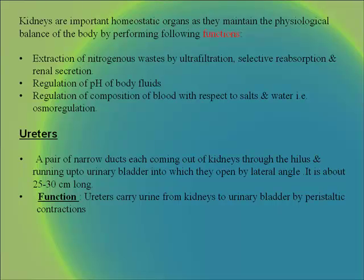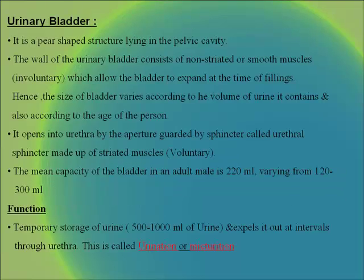Ureters are a pair of narrow ducts coming out of the kidneys through the hilus and running up to the urinary bladder, about 25 to 30 cm long. They carry urine from the kidneys to the urinary bladder by peristaltic contractions. The urinary bladder is a pear-shaped structure lying in the pelvic cavity, with walls consisting of non-striated or smooth involuntary muscles which allow the bladder to expand at the time of filling.